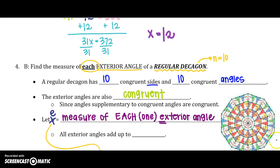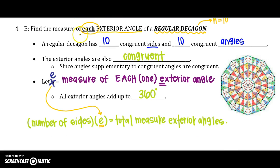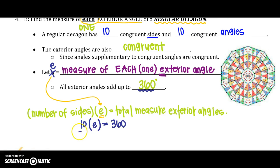Alright, so, and we also know that all exterior angles add up to – you are correct – 360 degrees. It doesn't matter how many sides, it's 360. So, here's our equation we are going to use to find one exterior angle. The number of sides, which is 10, times e, which is the measure of one exterior angle, equals the total measure of the exterior angles, which is 360. Pretty easy. To solve for e, we are going to divide by 10 on each side. So, e is 36 degrees.